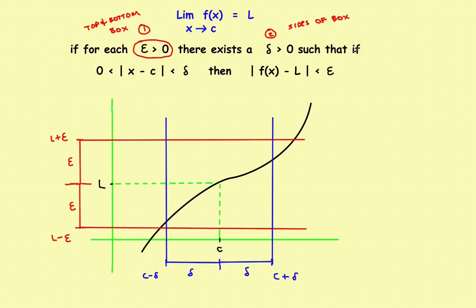Now what you have to do is this: the limit will exist if you can trap the function inside the box. So no matter what value of x you pick within the box, if you get a corresponding y that stays within the box, then the function is inside the box. And if you let the box get smaller and smaller, if the function stays inside the box, then you can show that the two arrowheads are approaching L and the limit exists.